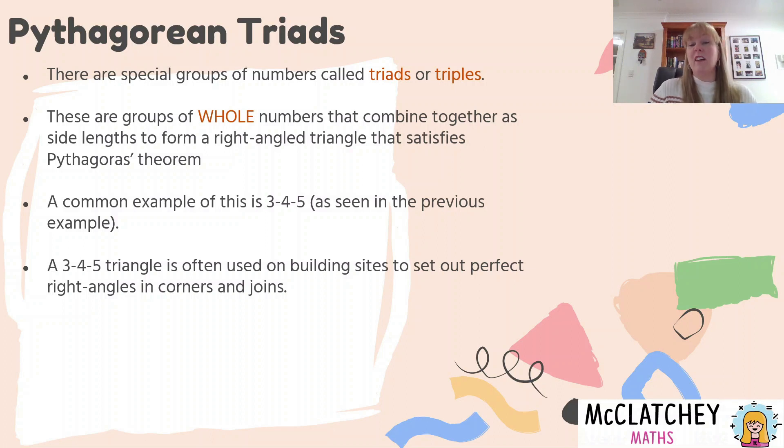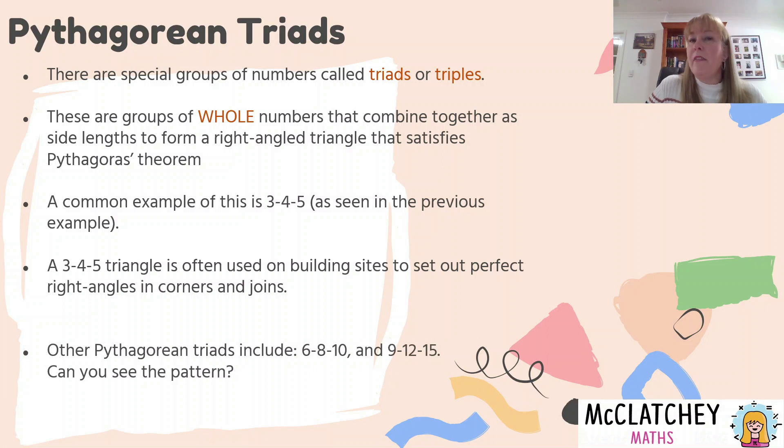Now a three, four, five triangle, funnily enough, is actually used in real life on building sites to set out perfect right angles in corners and joints. So on building sites, they actually have this three, four, five triangle made up out of timber, and they actually use that on the work site. A lot of people, even my own husband came to me home and he said, what's a three, four, five? Why do we use that on the building site? And I explained to him, it's all about Pythagoras's theorem. So there are some other Pythagorean triads as well. I'm going to give you two examples here: six, eight, ten, and nine, twelve, fifteen.